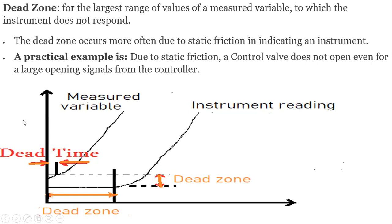Dead zone is the largest range of values of a measured variable to which the instrument does not respond. On a graph of measured variable versus instrument reading, the difference along the x-axis is the dead zone, and the time lag is the dead time. A practical example: due to static friction, a control valve does not open even for a large opening signal from the controller because it has a certain dead zone before it can respond.